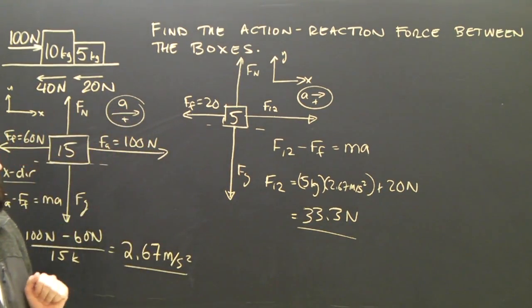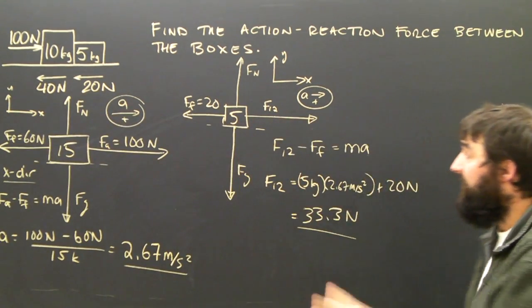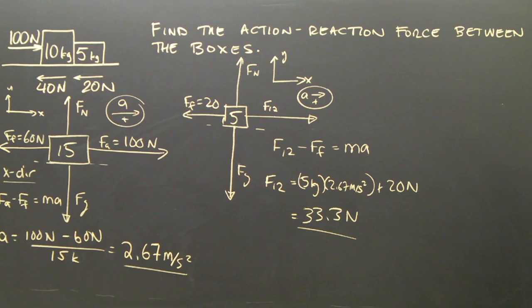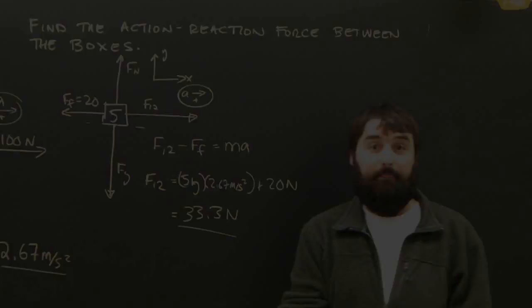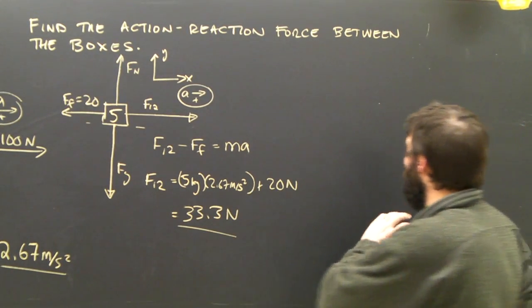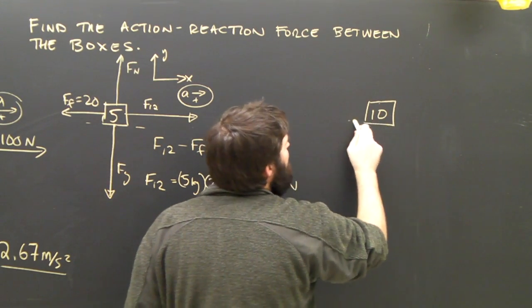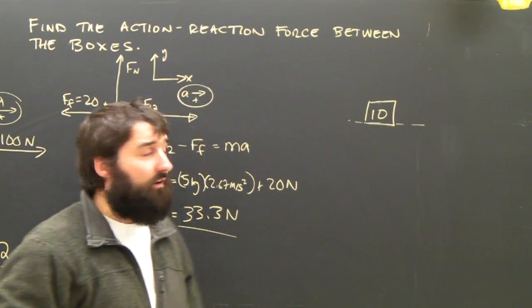So the action-reaction force is 33.3 newtons. I should be able to show, if I did a free-body diagram of the 10 kilogram box, I should be able to show that its force is exactly the same. We've got more space now. Draw a free-body diagram of the 10 kilogram object. It's a little more involved than the 5.